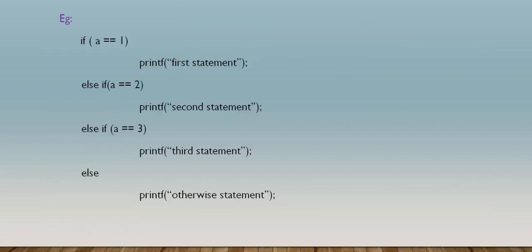Here is an example: if a equals 1, the first statement is printed; else if a equals 2, the second statement is printed; else if a equals 3, the third statement is executed. If a is not equal to 1, 2, or 3, then the otherwise statement is executed.